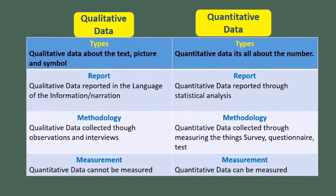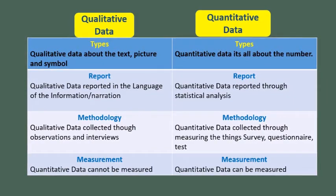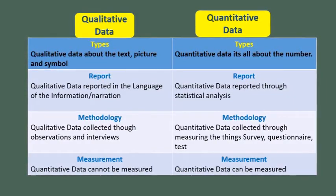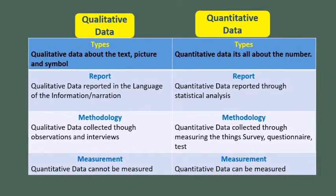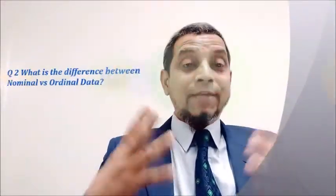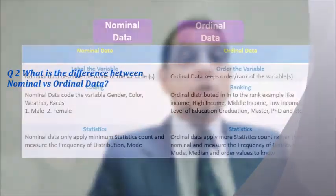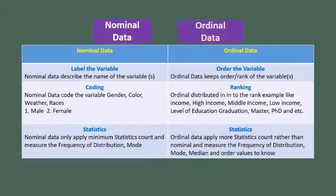Qualitative data cannot be measured, whereas quantitative data can be measured. Point number two: the difference between nominal and ordinal data.